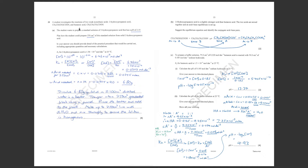So a student investigates the reactions of two weak monobasic acids — they both release just one hydrogen ion. We've got 2-hydroxypropanoic acid and butanoic acid. Question A: a student wants to prepare a standard solution of 2-hydroxypropanoic acid that has a pH of 2.19. Plan how the student could prepare a 250 cm³ solution, including appropriate quantities and the necessary calculations.